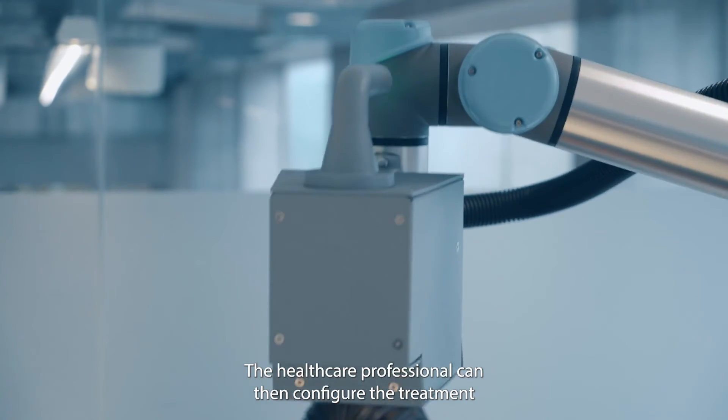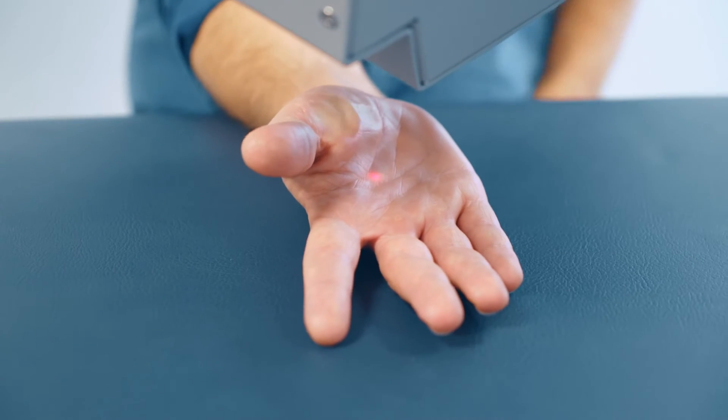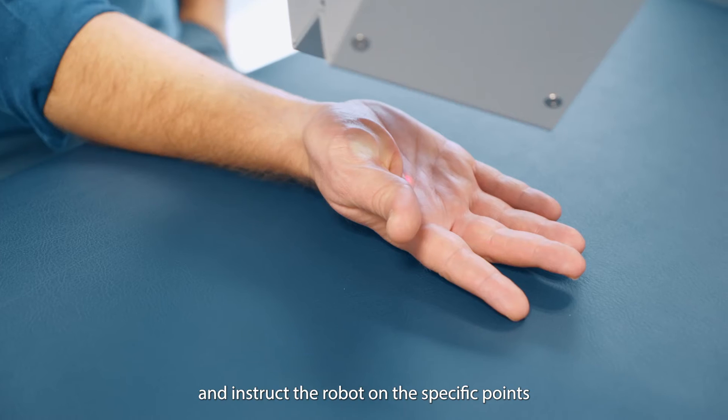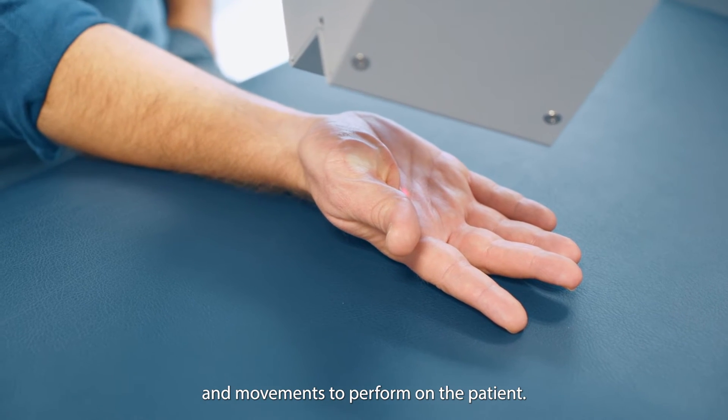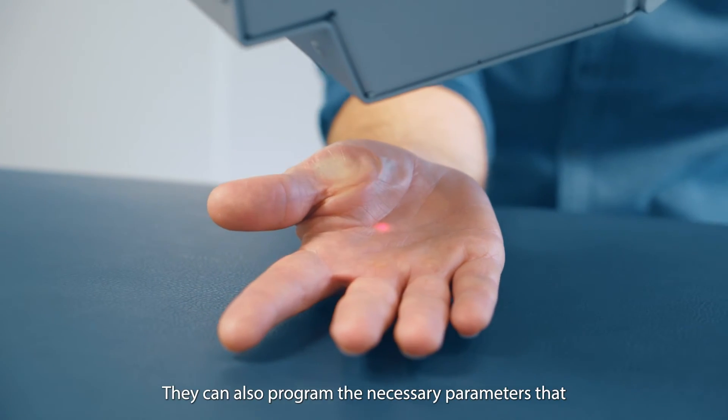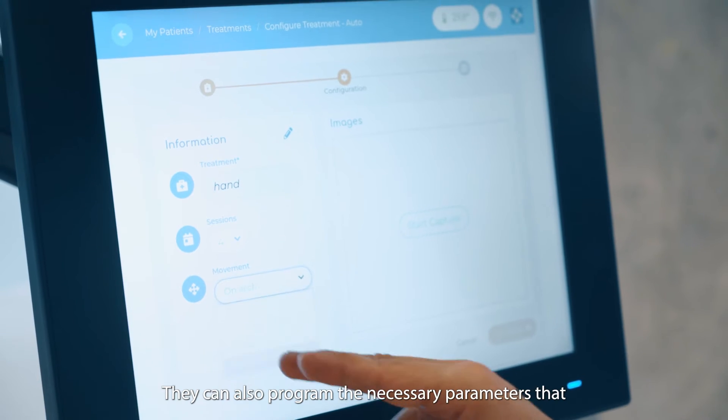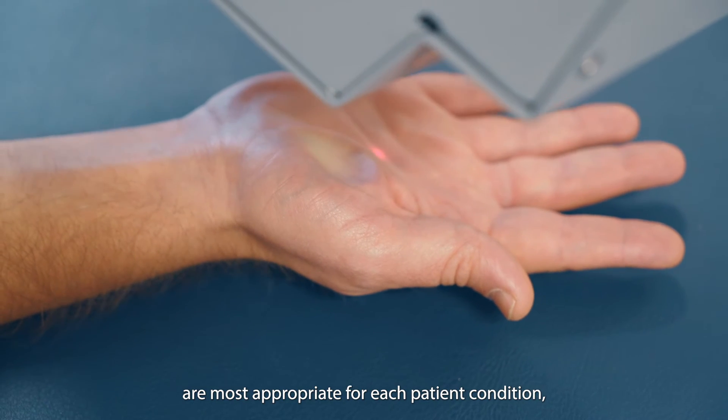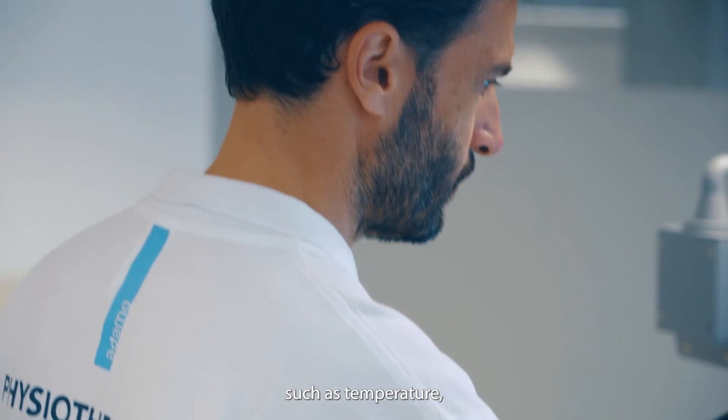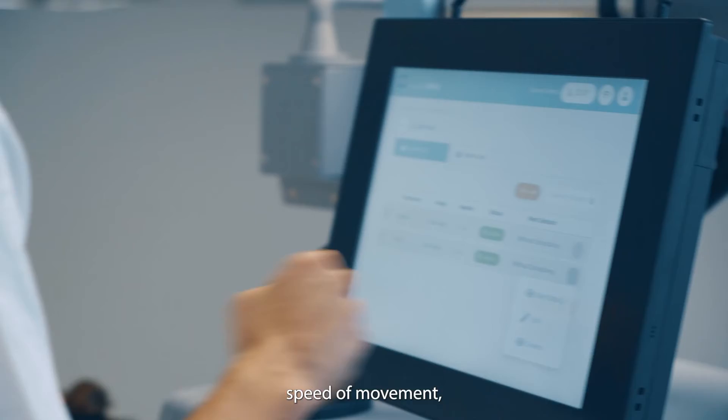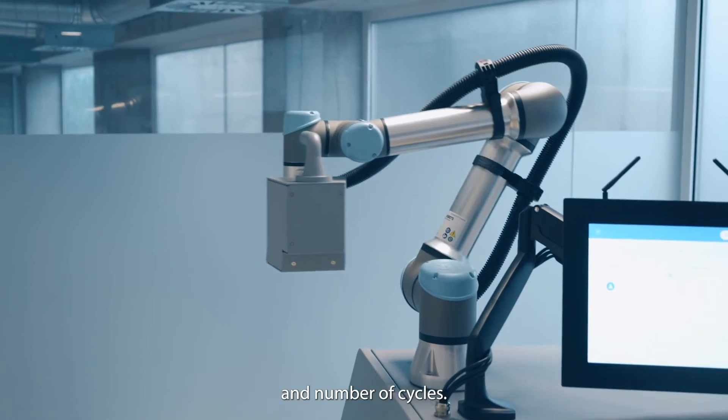The healthcare professional can then configure the treatment and instruct the robot on the specific points and movements to perform on the patient. They can also program the necessary parameters that are most appropriate for each patient condition, such as temperature, speed of movement, treatment duration and number of cycles.